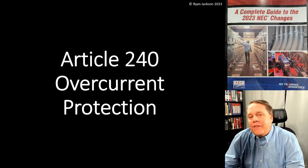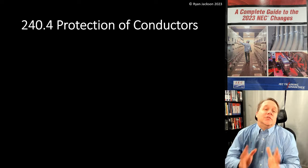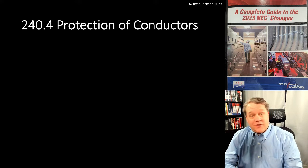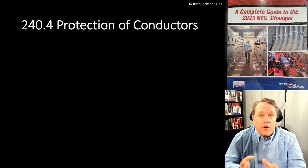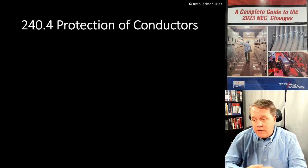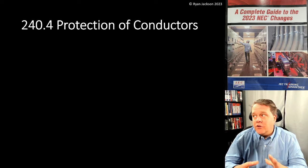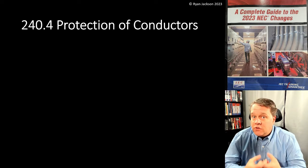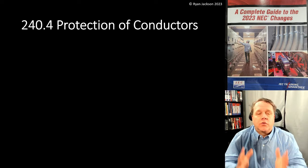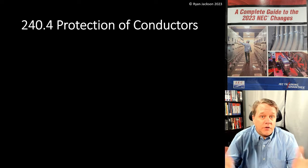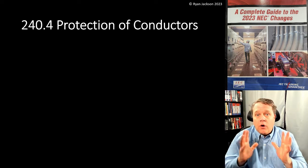Let's talk about my favorite article in the code: Article 240, Overcurrent Protection — specifically 240.4, Protection of Conductors. It doesn't get much more important than 240.4. Whether you're new to the NEC, an apprentice, or a journeyman who's not fully confident in the code, 240.4 is critical. It tells us how to keep wires from melting. It's that simple.